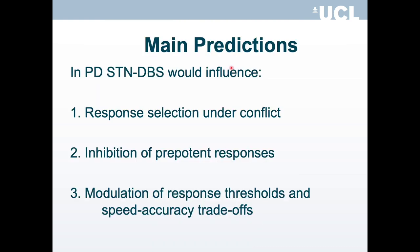The main predictions guiding our work were that in Parkinson's disease, STN DBS would influence a set of interrelated processes relating to executive control of action — specifically response selection under conflict, inhibition of prepotent responses, and modulation of response thresholds and speed-accuracy trade-offs.